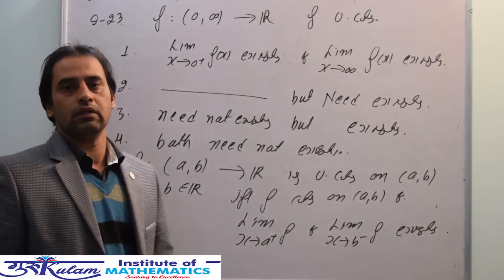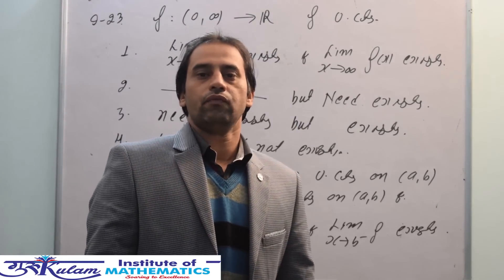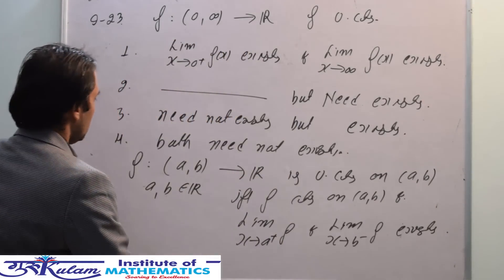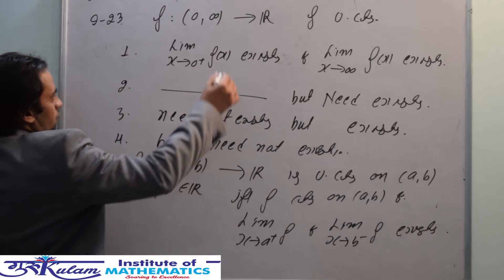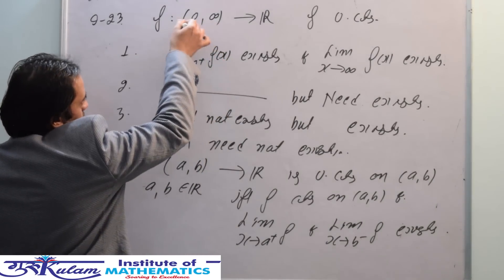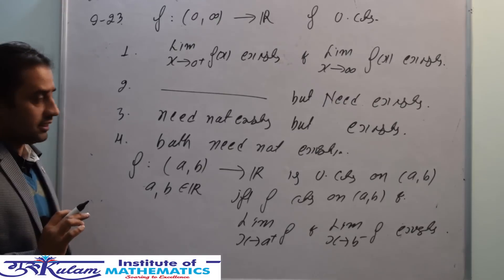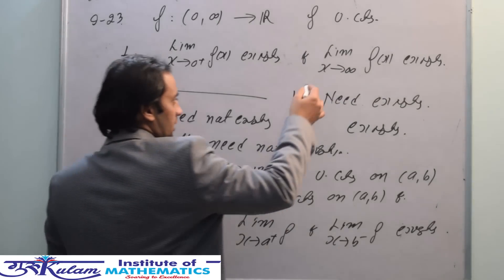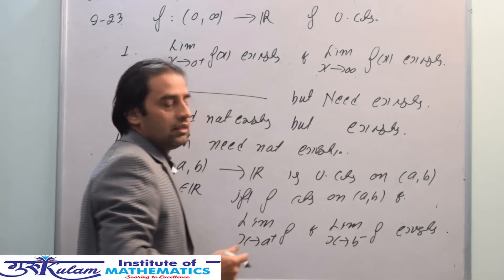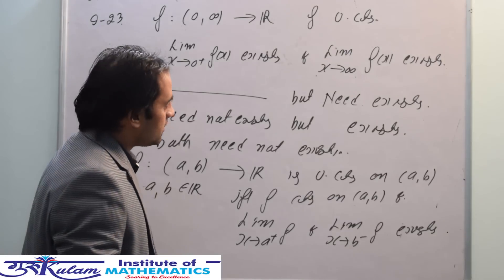Based on this statement, the first limit, that is x tends to 0+, always exists. But this limit x tends to plus infinity may or may not exist. For example, if you take f(x) equal to sin(x)...